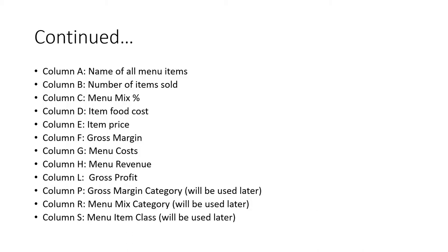To continue on about the menu engineering worksheet: in the first column, column A, you saw the name of all the menu items. Column B is the number of items sold, column C the menu mix percentage, column D the item food cost, column E the item price, column F the gross margin, column G the menu costs, and column H the menu revenue.